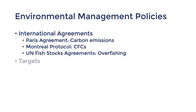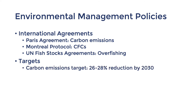The second type of policy to cover is targets. Environmental management targets often result from these international agreements, and they're often used to guide environmental management policies. Two targets often discussed in Australia are the carbon emissions targets and the renewable energy target. Because Australia has historically relied on its rich fossil fuel sources for energy, the emissions targets submitted to the Paris Agreement have been more modest compared to other advanced economies. Our target is a 26 to 28% reduction by the year 2030.